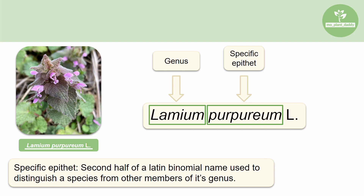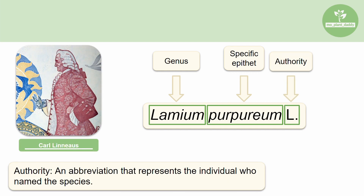You can take it a step further and add what is called an authority. An authority is an abbreviation that represents an individual who named the species. In this case, L stands for Carl Linnaeus, who is actually the one who invented the binomial nomenclature system. Something you may have noticed is that the Latin binomial is italicized, but the authority is not. The authority should never be italicized, but the Latin binomial should always be.